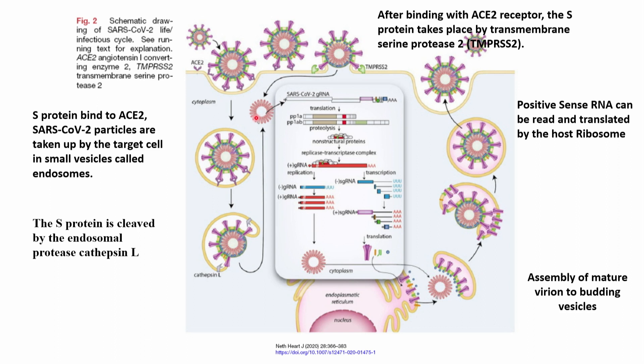This RNA is positive-sense RNA and can be read and translated by the host ribosome. The genome is first translated to PP1A and PP1AB, which I will discuss in the next slide in more detail, and then autoproteolysis takes place. Autoproteolysis gives functional proteins that contain machinery for transcription and replication. Since this process takes place outside the nucleus, that machinery is needed — as outside the nucleus, only translation machinery is present, not transcription and replication.